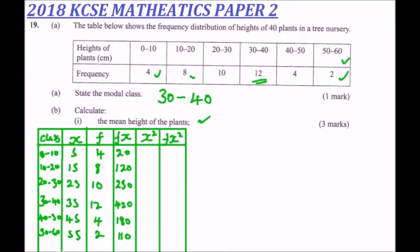Next we square each midpoint to get X²: 5² = 25, 15² = 225, 25² = 625, 35² = 1225, 45² = 2025, and 55² = 3025.